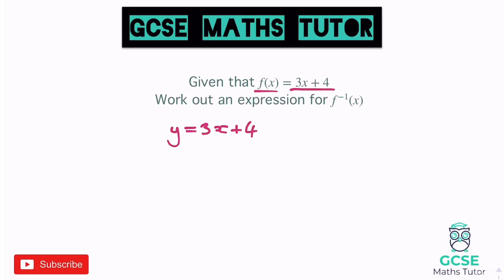So if I want to make x the subject, the first thing I do is take away 4. Obviously it's just rearranging equations — you can always have a look at my video on rearranging equations. But minus 4 from both sides would leave you y minus 4 equals 3x. And then to get x as the subject, we divide by 3, and we get y minus 4 all over 3 equals x.